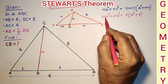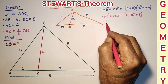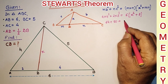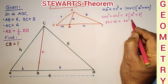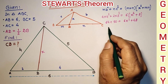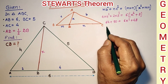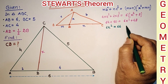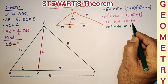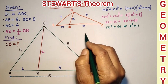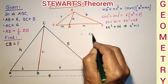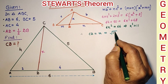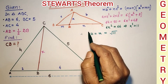This gives 64 plus 50 equals 6x² plus 48. After simplification, 6x² equals 66, which gives x² = 11, and therefore CD = √11 units. This is the required length of CD by Stewart's theorem.